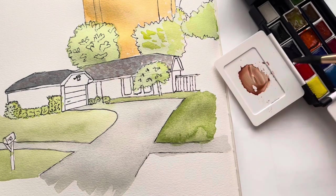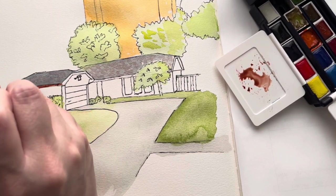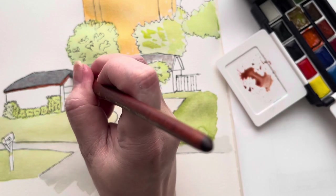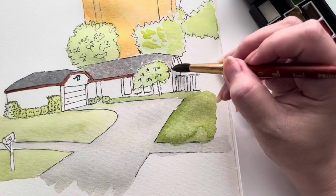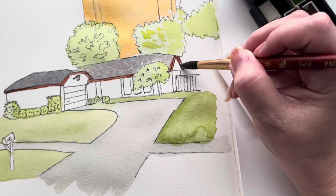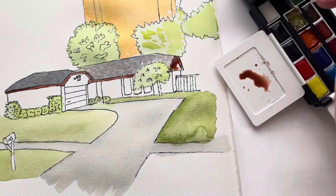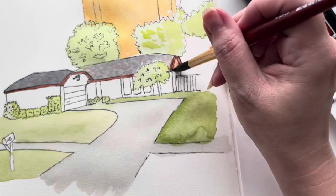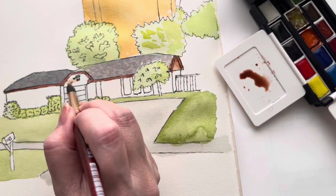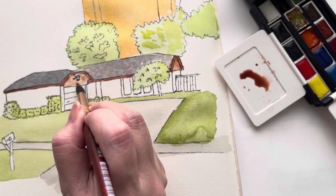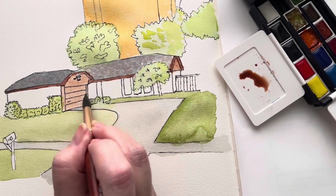That is the burnt umber and alizarin crimson mixed together for the house color. This neighborhood was named Kenswick, so that's an English name, and these houses are stylized after cottages in England. My mom thought it would be great to paint the house like this reddish brown. As a kid, you never appreciate things your parents are doing—I just thought it ended up looking like a barn.